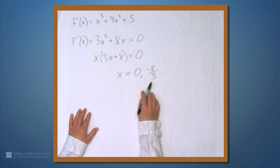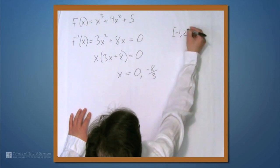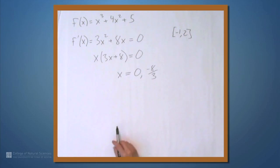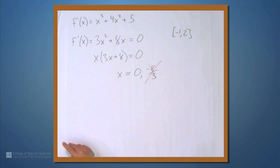But here's where it's really important to keep in mind what the given interval is. Because our interval is negative 1 to 2, and negative 8 thirds isn't in that interval. It's smaller than negative 1. So, this is out.